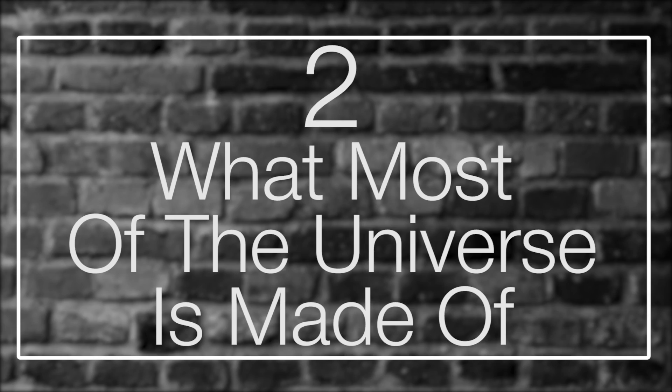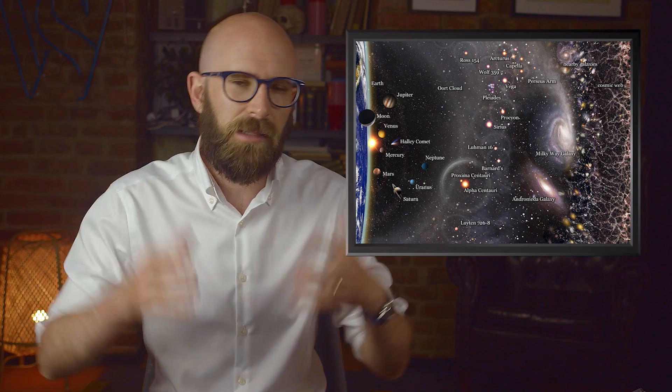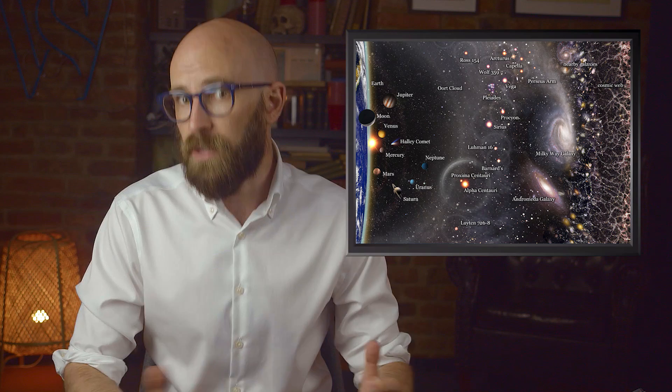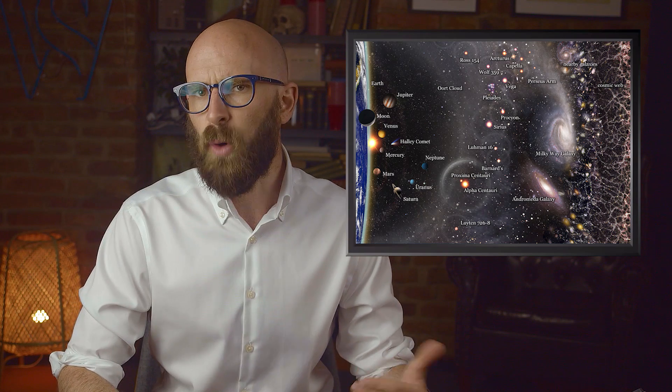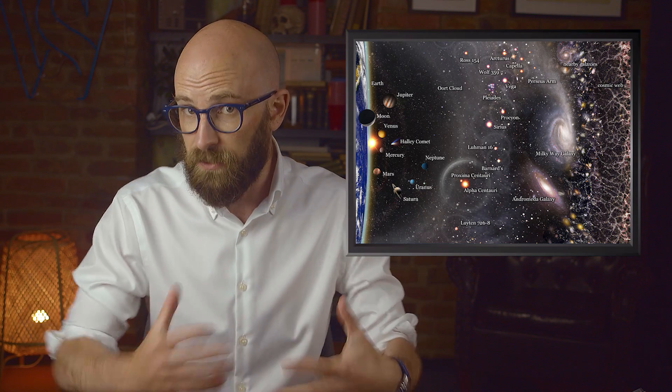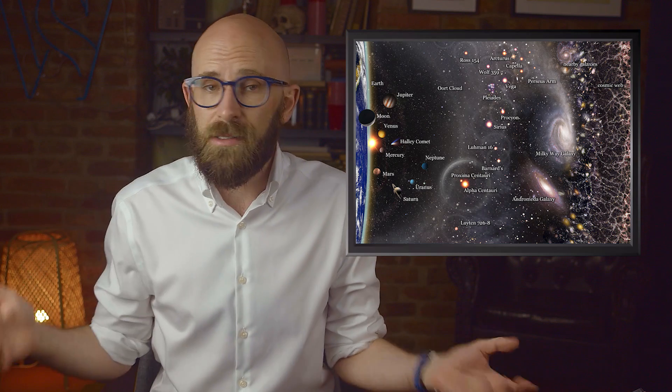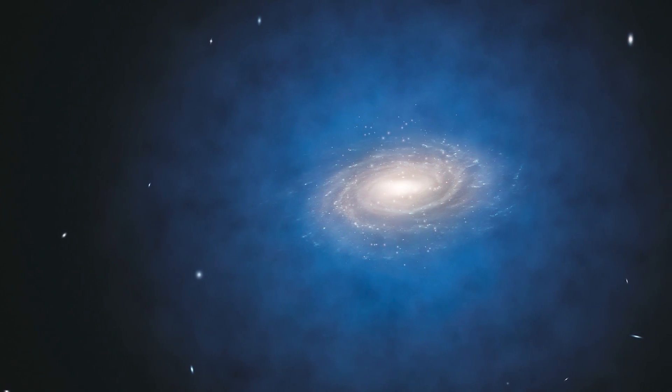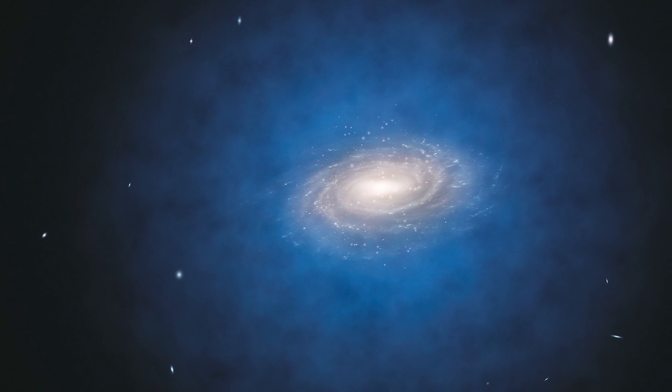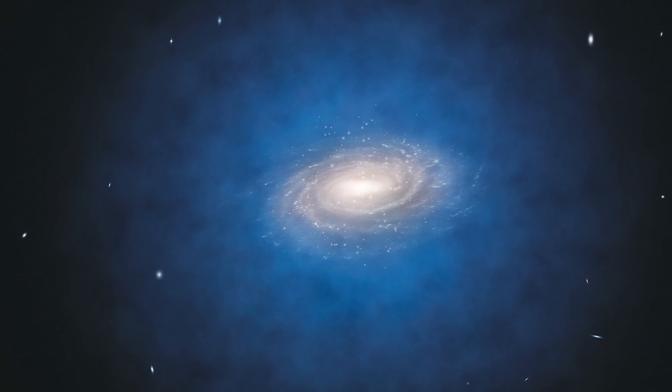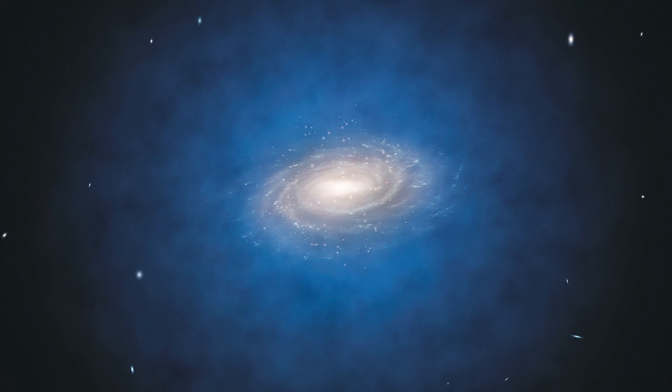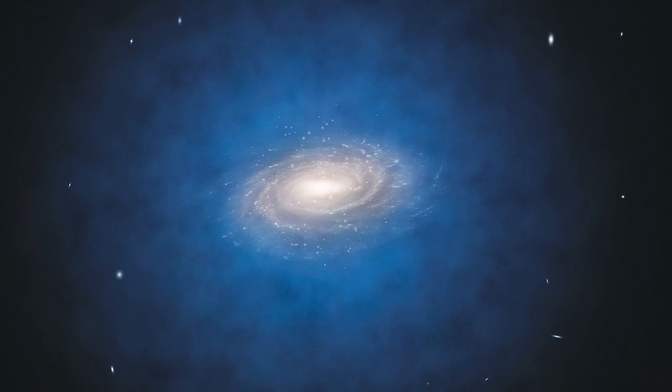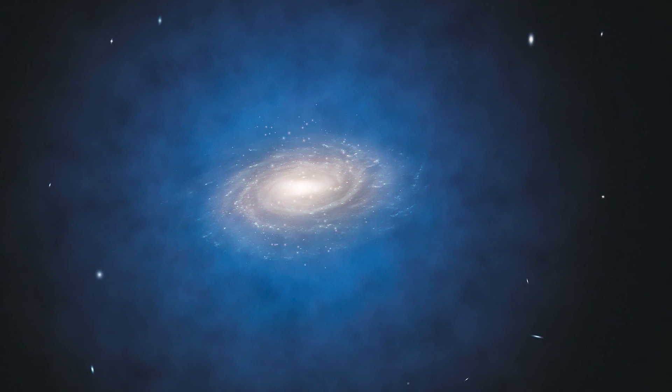Number two: What most of the universe is made of. There's a whole lot of stuff in the universe and that stuff has a lot of mass. If you were to make a quick guess, you'd probably assume a sizable portion of the universe's mass was made up of things you know: matter, planets, stars, dogs. You'd be terribly wrong though, because it's believed at the very most that matter makes up about 10% of the universe.